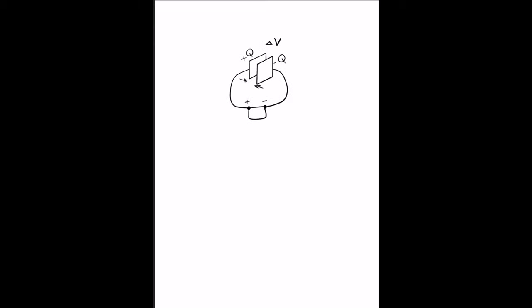A capacitor is a way to store charge, and capacitance is a scalar quantity defined as Q over delta V. It is a measure of the amount of charge that can be stored in the capacitor for a certain potential difference. Its SI unit is the farad, where 1 farad equals 1 coulomb over 1 volt.